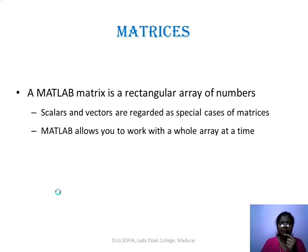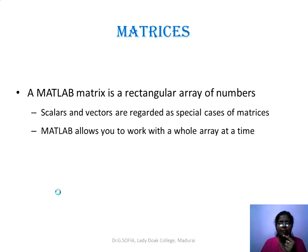A MATLAB matrix is a rectangular array of numbers. Scalars and vectors are regarded as special cases of matrices. A scalar is a 1×1 matrix. A row vector is 1×n, with one row and n columns. A column vector is n×1, with n rows and one column. So whether it is a scalar or a vector, it is a type of matrix.